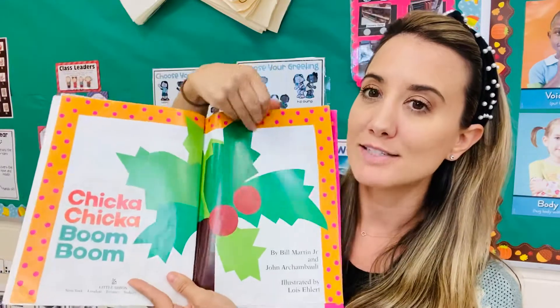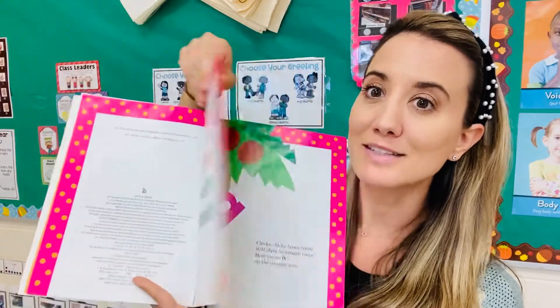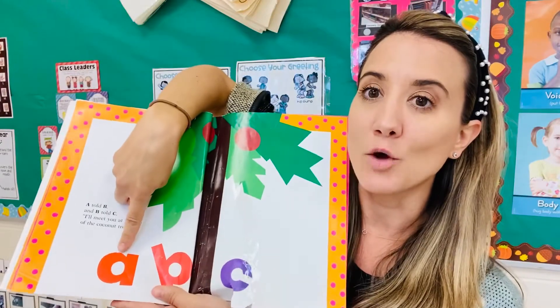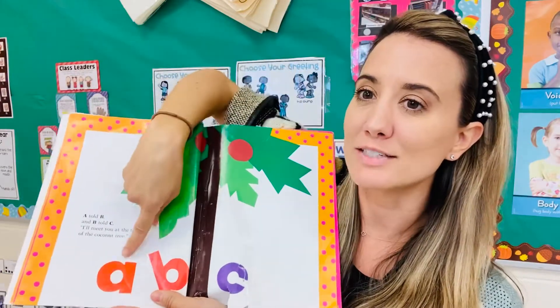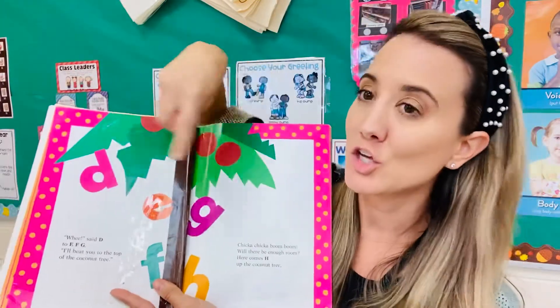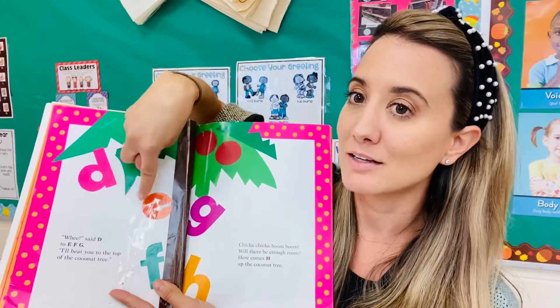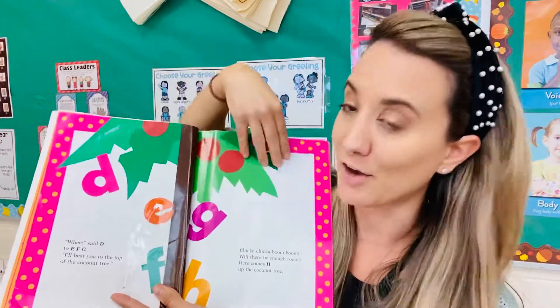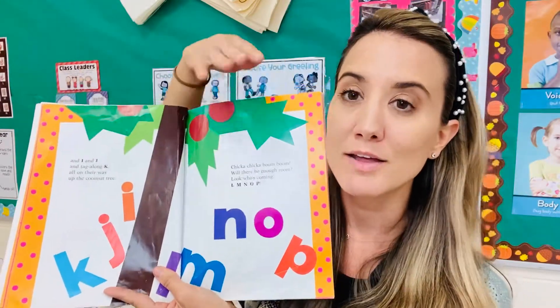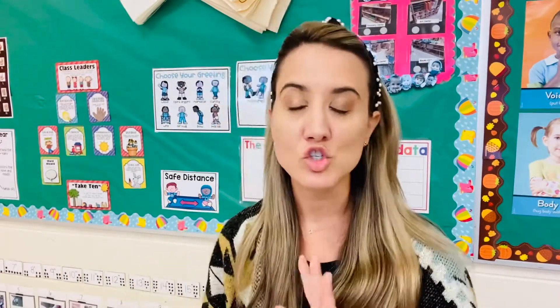Call attention to the different letters in the book. This is a lowercase A. Call attention to whether they're lowercase or uppercase. You can call attention to the letters that are in their name, and use the book that you choose as inspiration for your child to make their journal page.